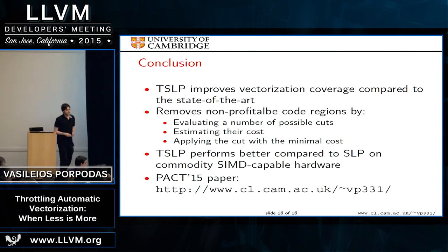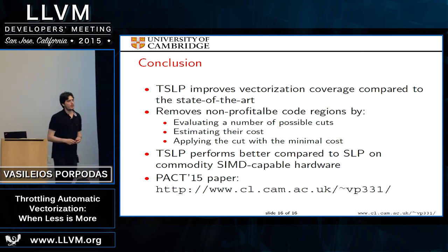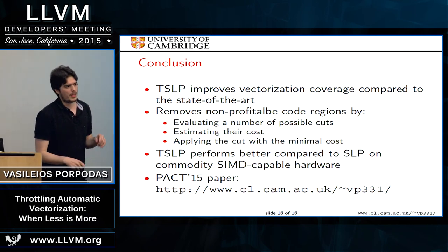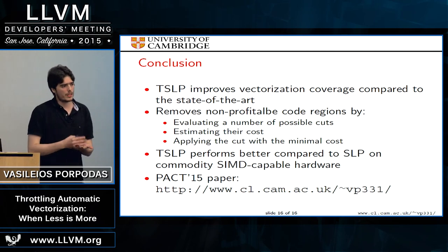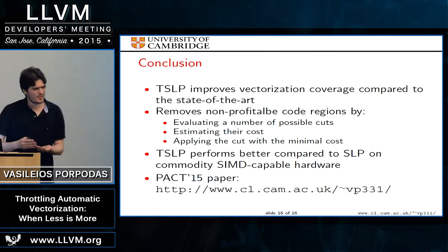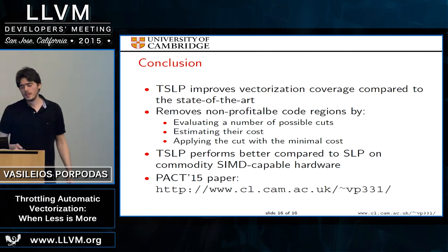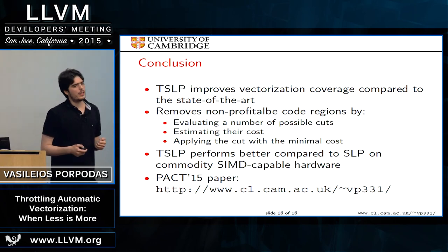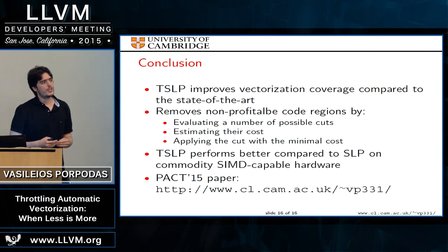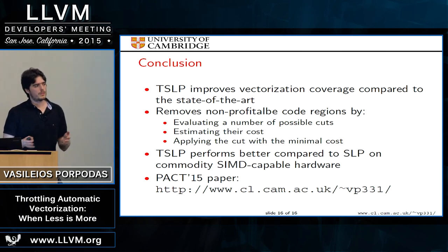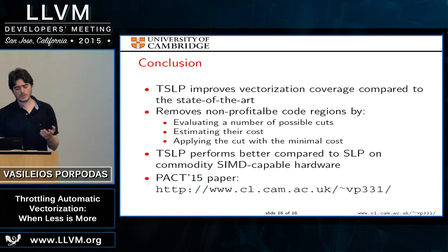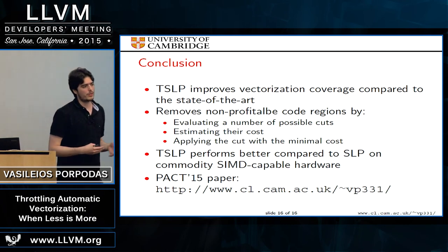Question: What does evaluating all possible cuts do to build time? With a threshold of 50, the build time overhead was quite large — about 10% over the vanilla compiler. The team is working on a better algorithm to make this much faster.